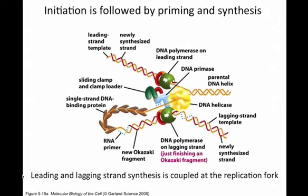Initiation is followed by priming and synthesis. Leading and lagging strand synthesis is coupled at the replication fork. You're going to get recruitment of your clamp, clamp loader, and polymerase. We talked about your clamp loader binding to the primer-template junction and then recruiting the clamp, and then that recruits polymerase. So now it's time to start fitting all these pieces together.